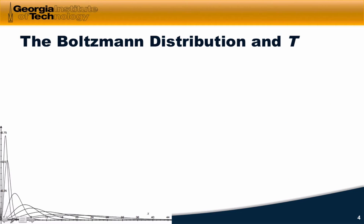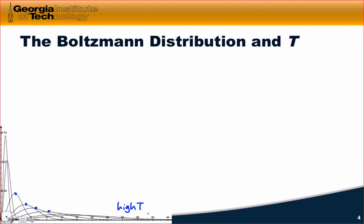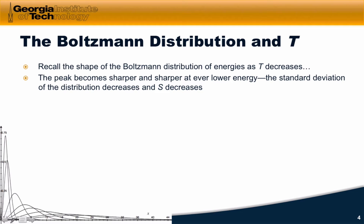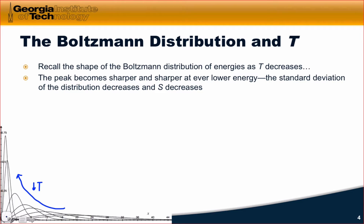To shed some light on this, let's think about the Boltzmann distribution as a function of temperature. In the bottom left-hand corner of this slide, I've got Boltzmann distributions at a variety of temperatures. The ones that are far out to the right are high temperature distributions, and as we lower the temperature, not only is the maximally likely energy decreasing, but it's becoming more and more likely — there's an exponential move towards higher likelihood for the lowest energy state. The peaks become sharper and sharper at ever lower energy as we lower the temperature. The standard deviation of the distribution decreases, and S decreases as a result since a smaller number of energy states are occupied with more particles.